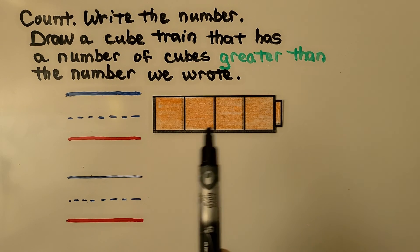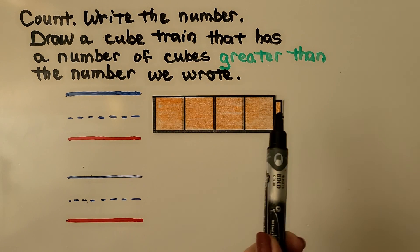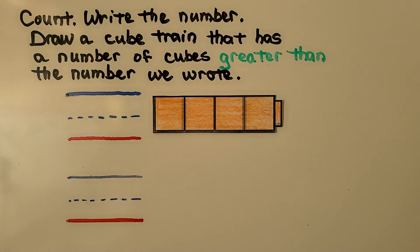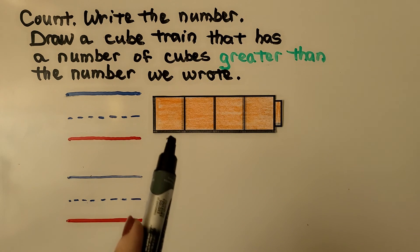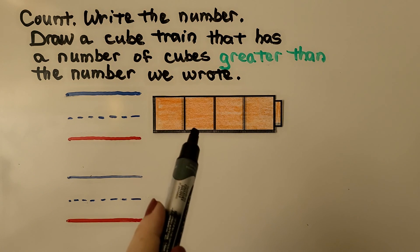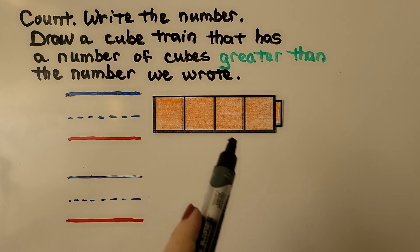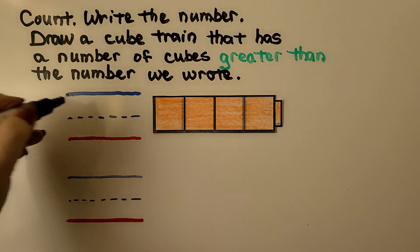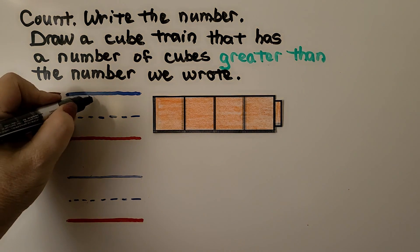Here we have a cube train. We need to count the cubes in the cube train. I count 1, 2, 3, 4. We can write the number 4.